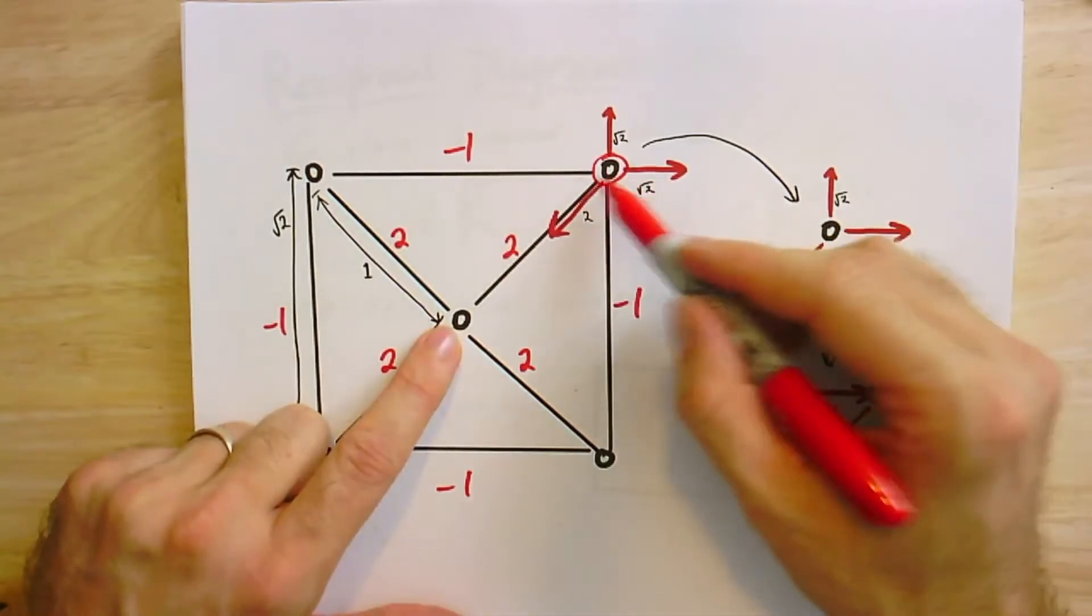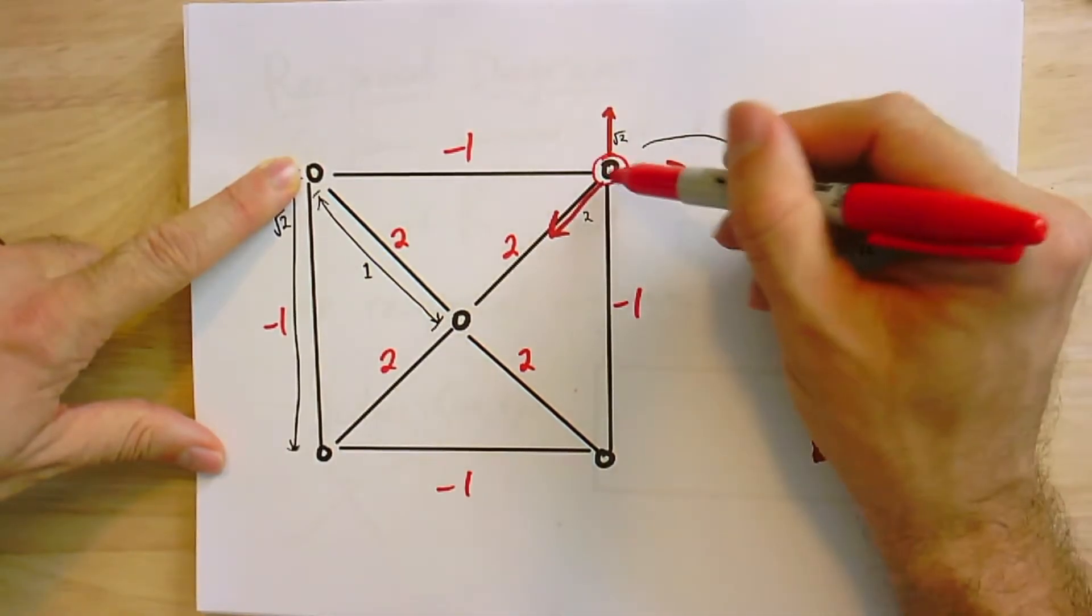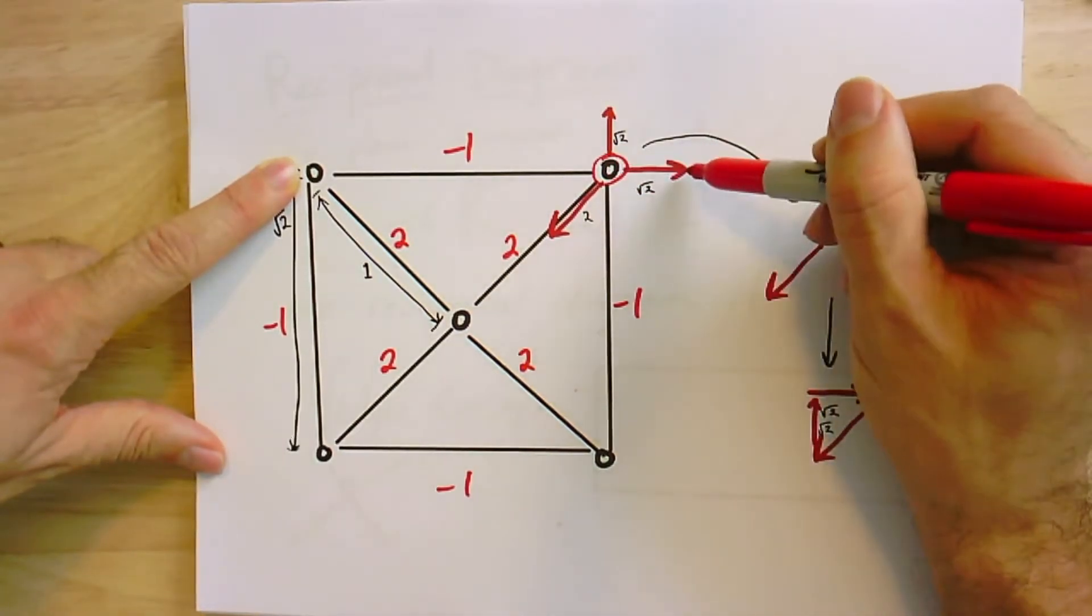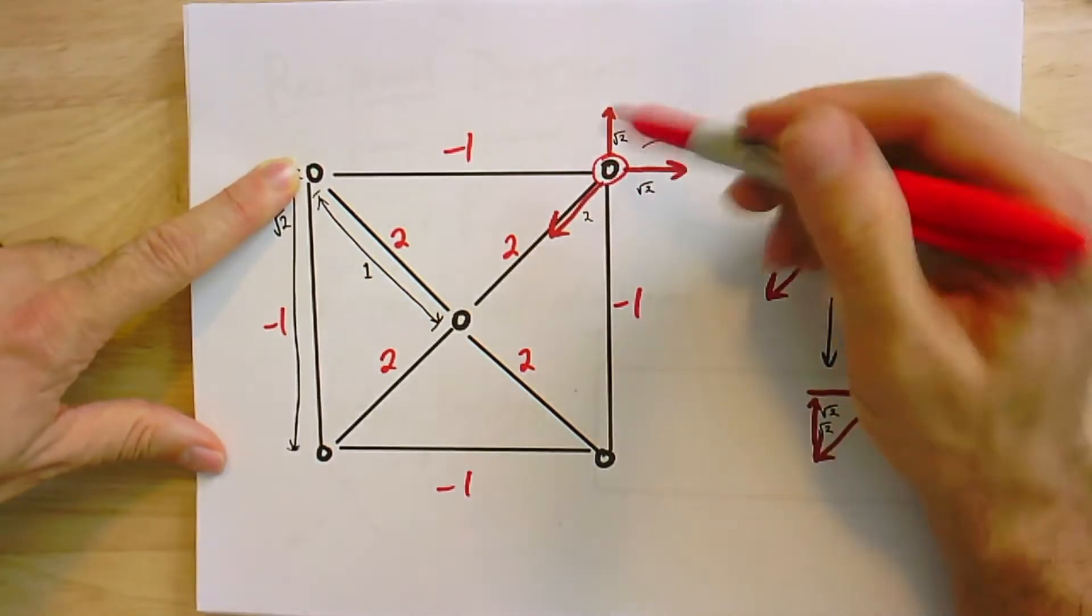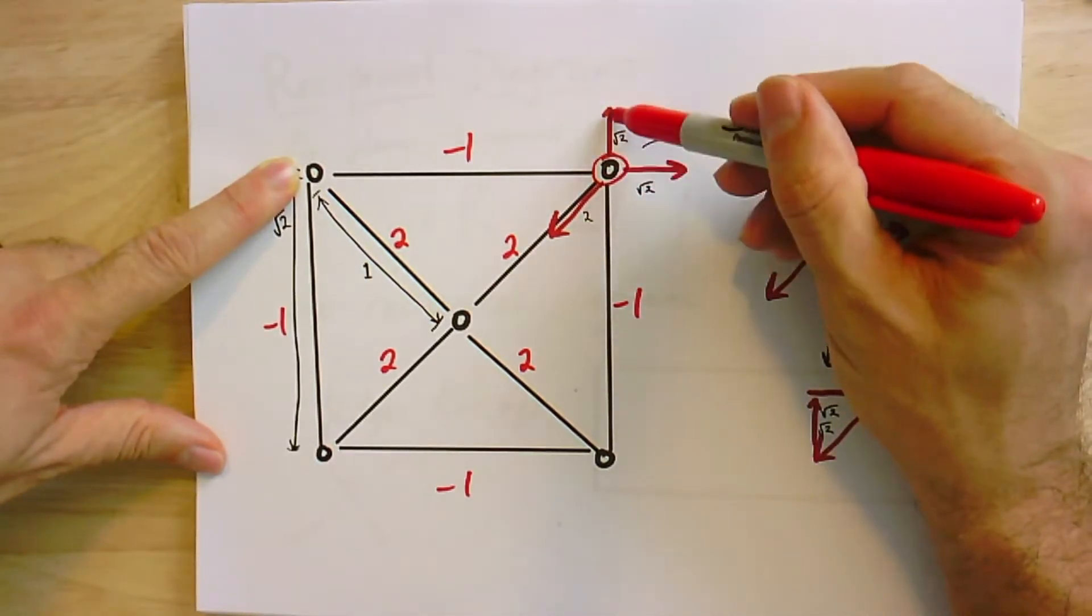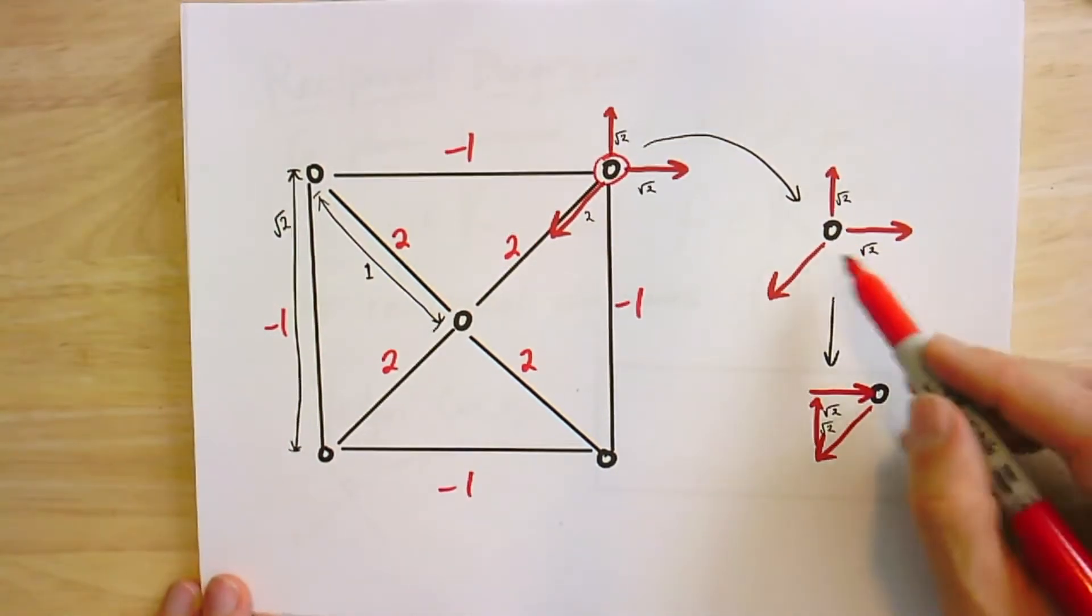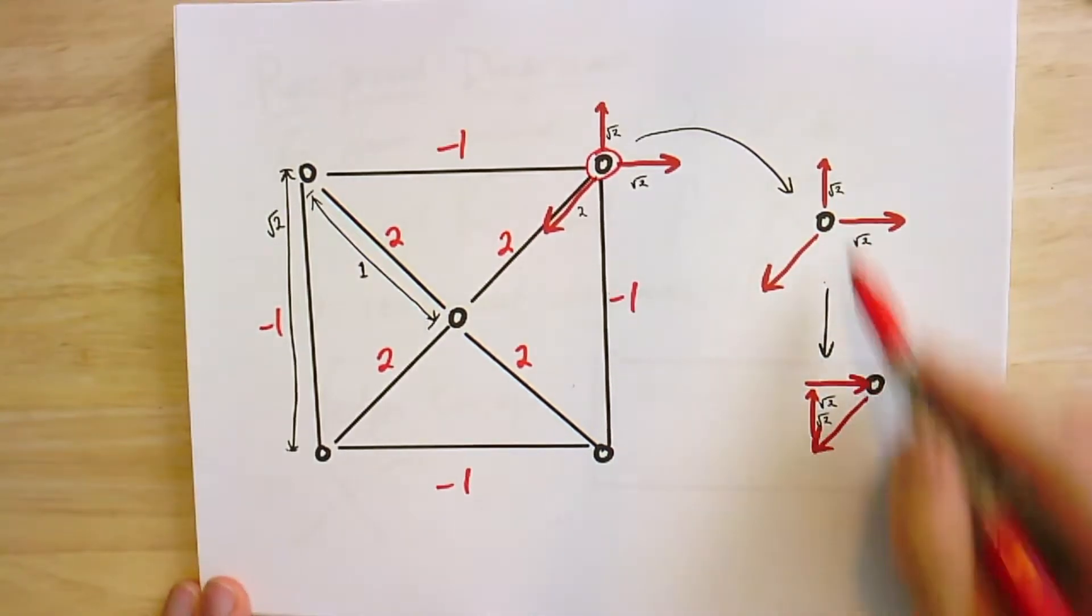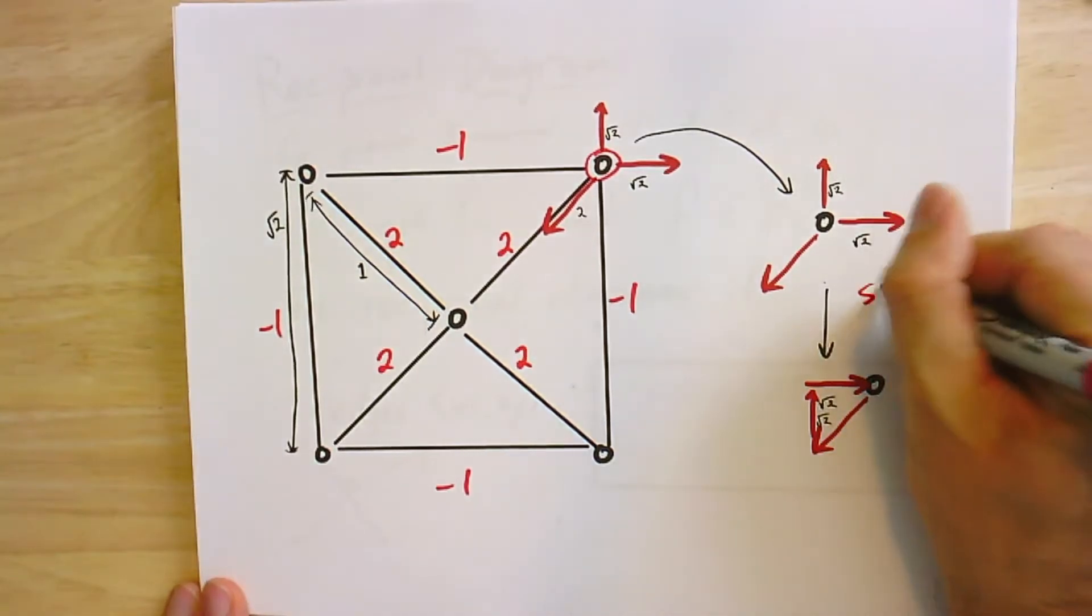This edge here, it has length square root of two, it has spring constant negative one, so it's going to be square root of two length is going to be the length of the force, and it's going to be in this direction. The minus means it's going away. It's a pushing instead of a pulling. And similarly, this one is going to be square root of two. So if I pull this one out, here's my free body diagram for that vertex. I want to know what the sum of the forces is. And it's not too hard to check that if you add them all up, they come together into this nice triangle. And therefore, the sum of the forces is zero.